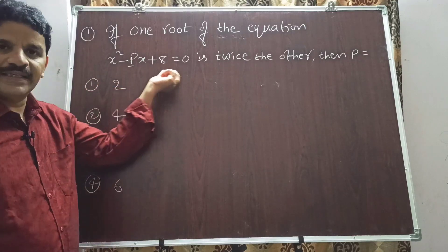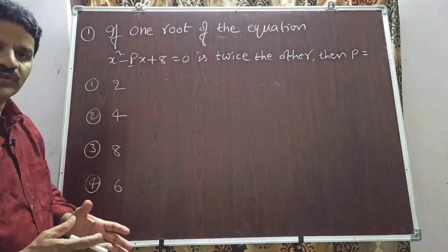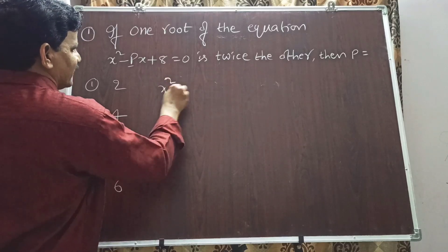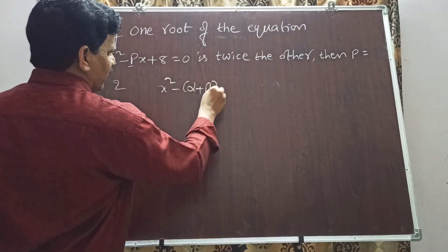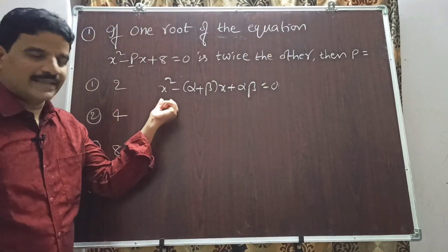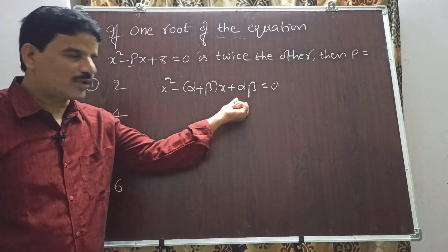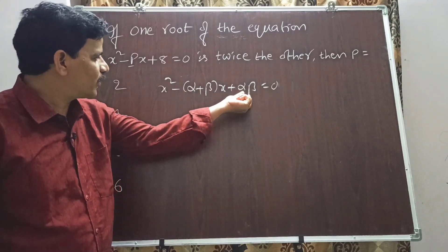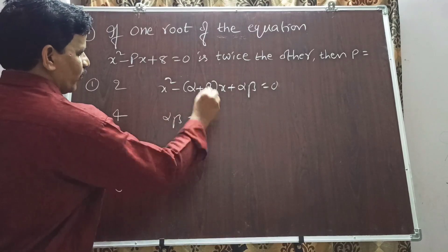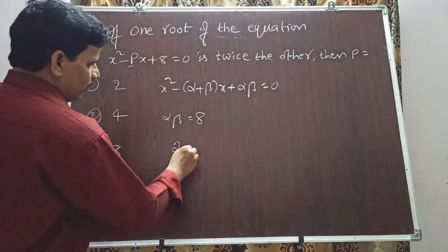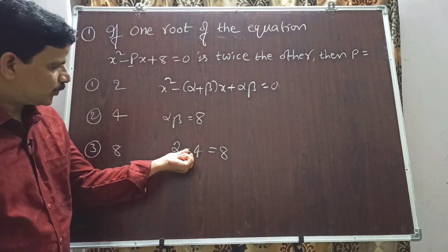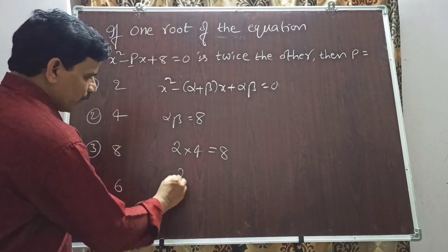Compare with ax² + bx + c = 0. When roots are alpha and beta, the quadratic equation is x² - (alpha + beta)x + alpha·beta = 0, so x² minus sum of roots times x plus product of roots equals 0. The product of roots alpha·beta = 8. Factors of 8: 2 × 4 = 8, so alpha = 2, beta = 4.